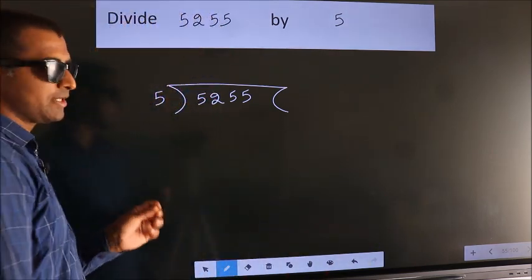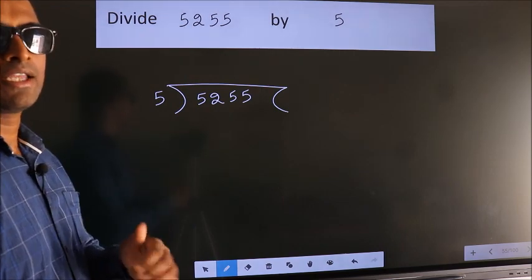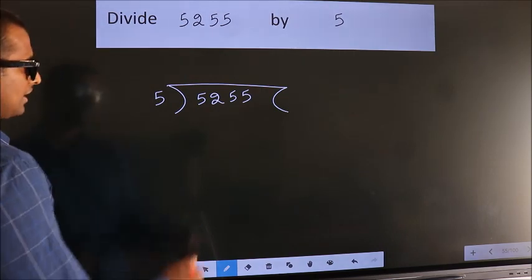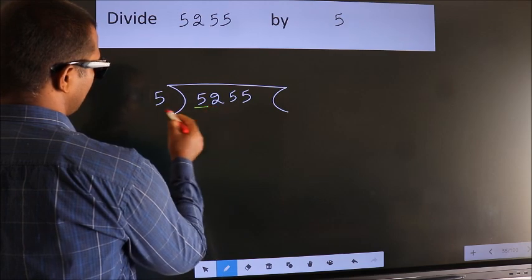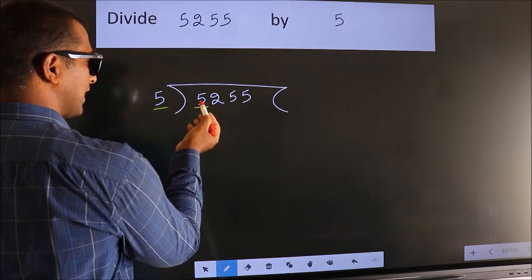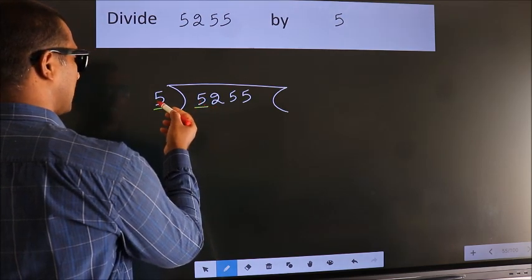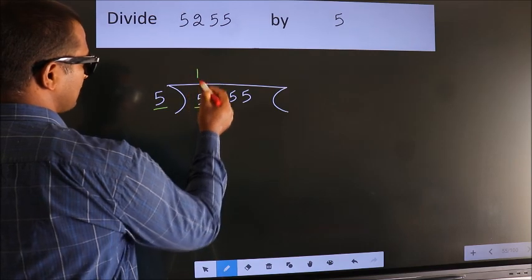This is your step 1. Next, here we have 5, here 5. When do we get 5? In the 5 table. 5 once, 5.